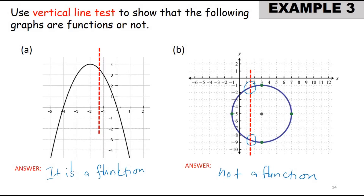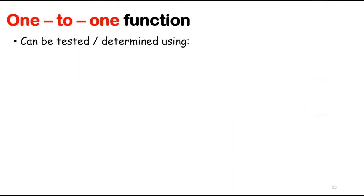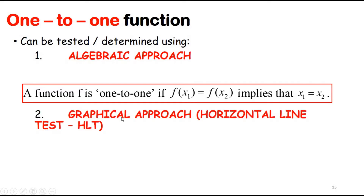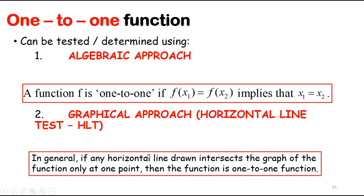For a one-to-one function, it can be tested by using an algebraic approach or a graphical approach. For the algebraic approach, a function f is one-to-one if f(x₁) = f(x₂) implies that x₁ = x₂. By the graphical approach, we use the horizontal line test — if any horizontal line drawn intersects the graph of the function at only one point, then the function is one-to-one.